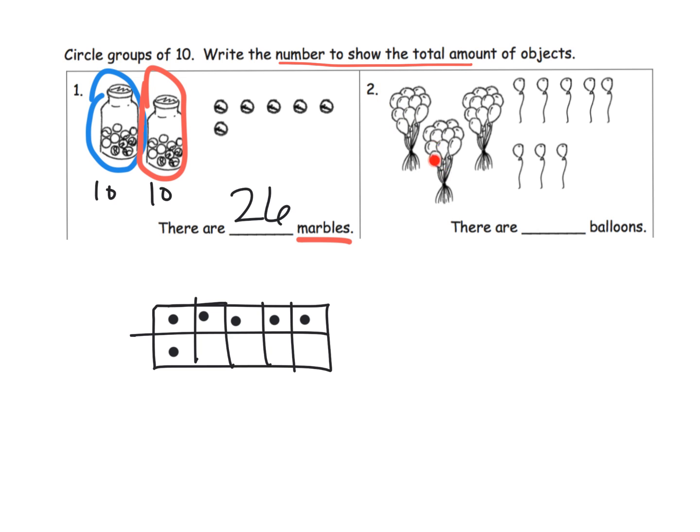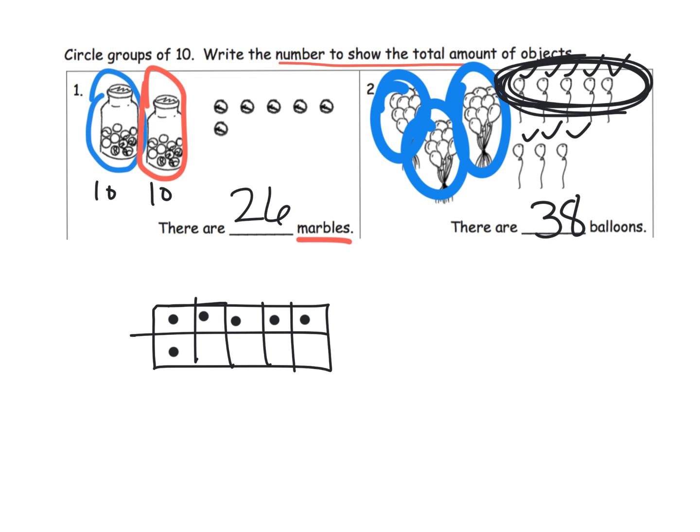Right here we can see that we've got 10 here, 10 here, 10 here. So I'm going to circle those. 10, 20, and 30. There's our 10, 20, and 30. Now we're going to count 31, 32, 33, 34, 35, 36, 37, 38.